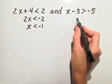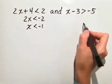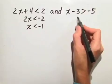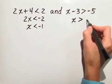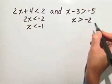And we have another inequality. x minus 3 is greater than negative 5. We simply add 3 to both sides, and we get x is greater than negative 2.